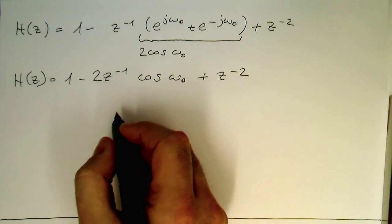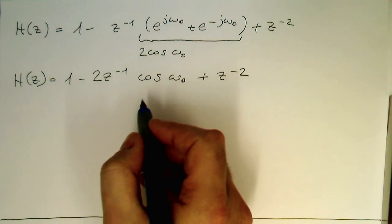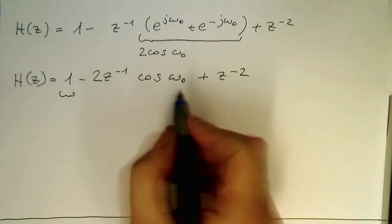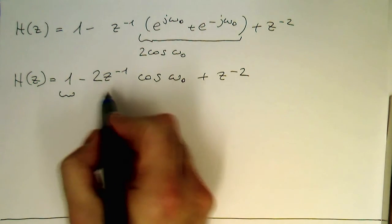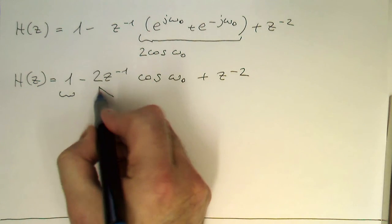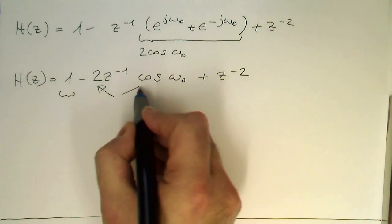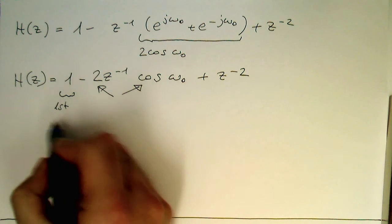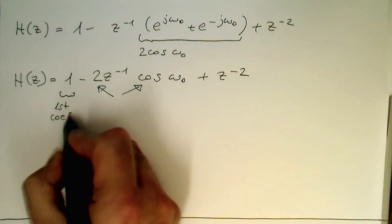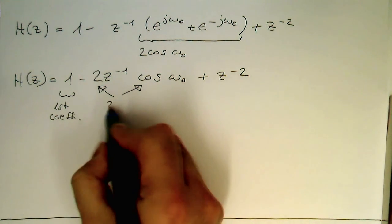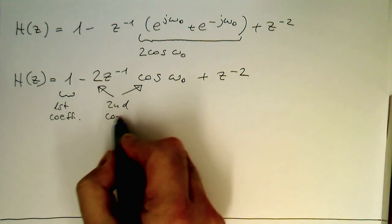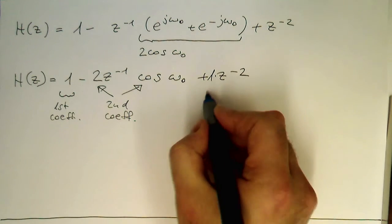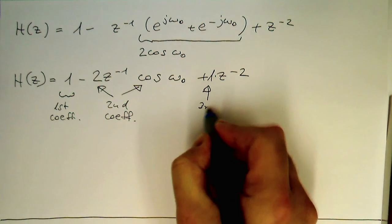This is a general rule: if we have complex conjugate zeros, the coefficients become real. So our first coefficient is 1, the second coefficient is -2*cos(ω₀), and the third coefficient is 1.